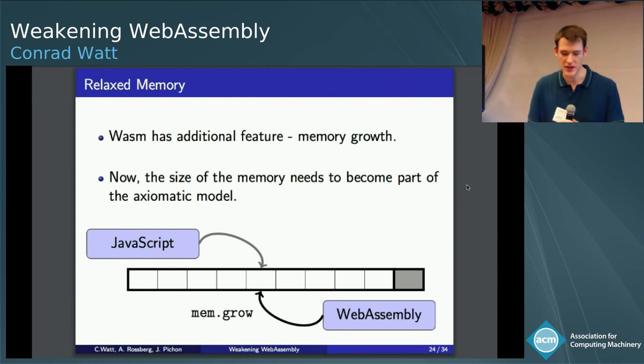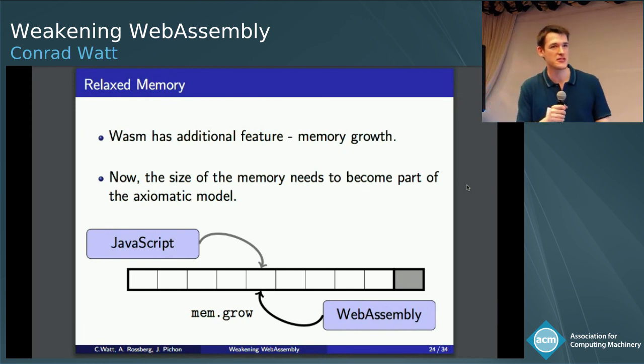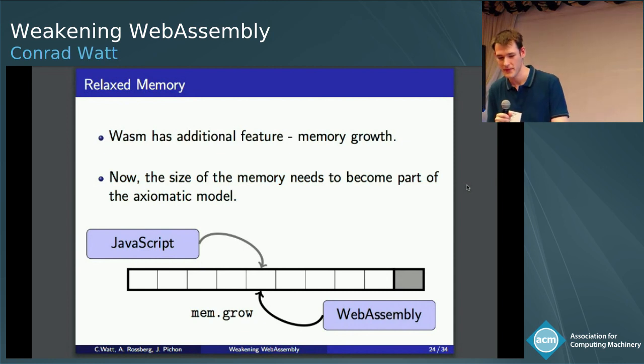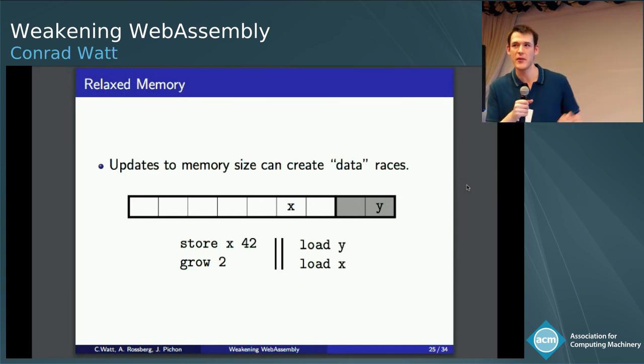So now for a slightly more unique part of the WebAssembly memory model. I already said that I kind of skipped over how bounds checks were going to work in this concurrent world. But one of the interesting things about WebAssembly is that the bounds don't stay static over the lifetime of the program. As the program is executed, you can get these memory growth instructions, which will give you extra length of the memory. And this means actually because the bounds can change over time, we need to start thinking about how does that interact with the memory model? How does information about the bounds propagate? And does it have to be in a relaxed way?